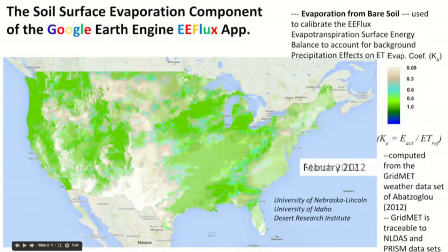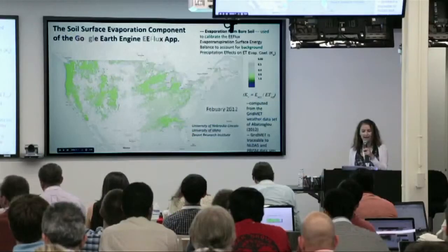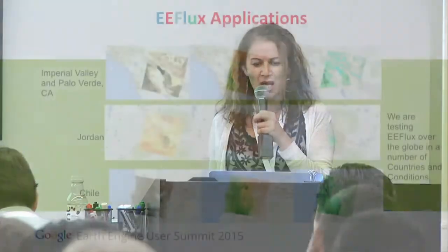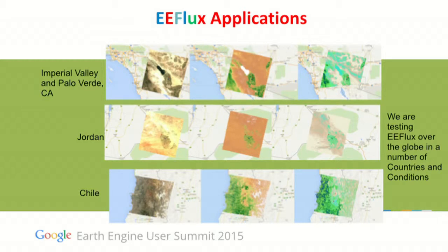Another important parameter: the model runs a water balance to account for background evaporation, looking at soil wetness from precipitation events. So far, I think we have test runs across around 80 countries around the globe. The top test cases shown here are from Imperial Valley California, Jordan, and Chile.